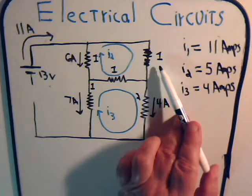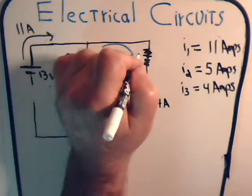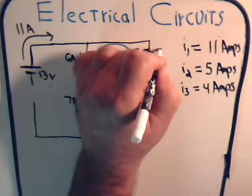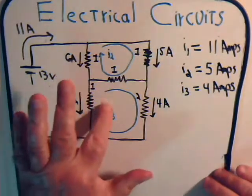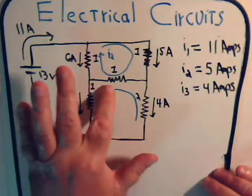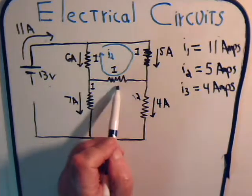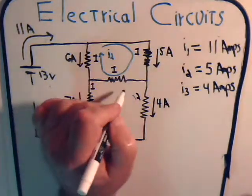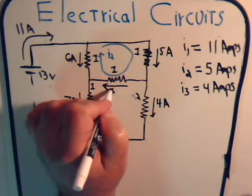And for this resistor here it's going to be 5 amps going in this direction. So we can get rid of these now, except we want to remember here we have I3, 4 amps in this direction, and we have 5 amps in this direction, so that's going to give us a net current of 1 amp in that direction.